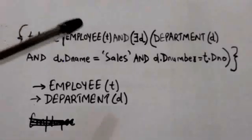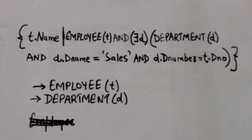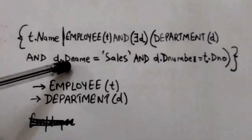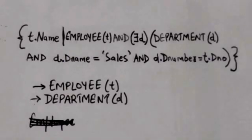the value of Dnumber attribute in that department tuple, and value of Dname attribute in that department tuple is sales. Name attribute is retrieved for each employee tuple which will satisfy this condition. Thank you very much.